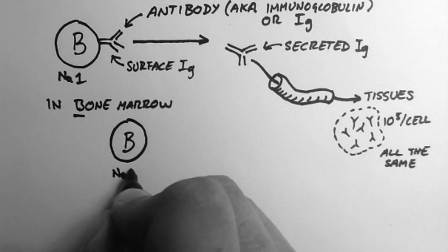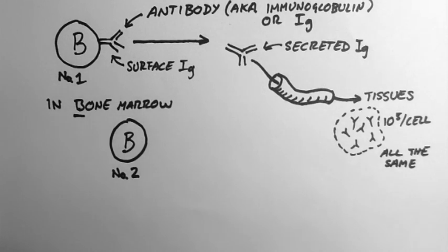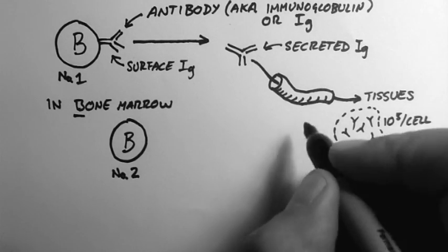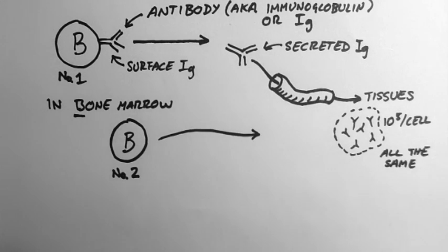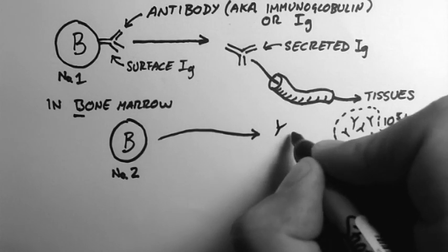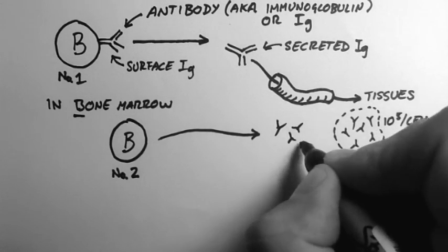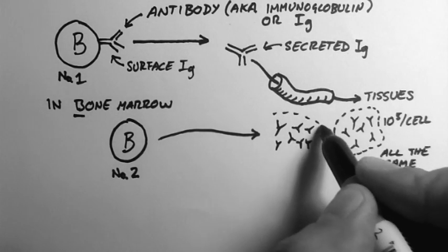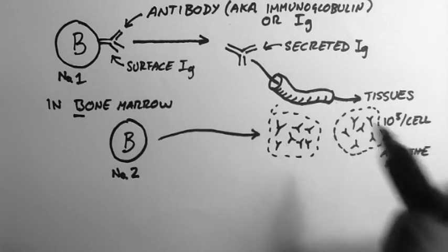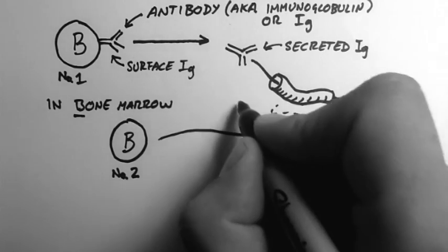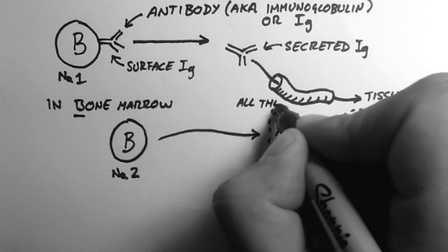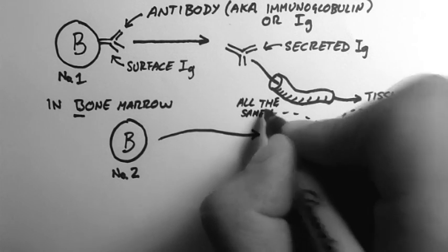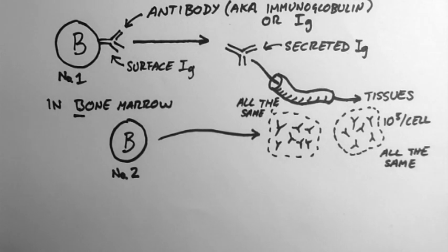Now if we have a second B-cell, here's B-cell number 2, it will also produce antibodies. And these are all of the same type as well. But they're different from those of the other B-cell.